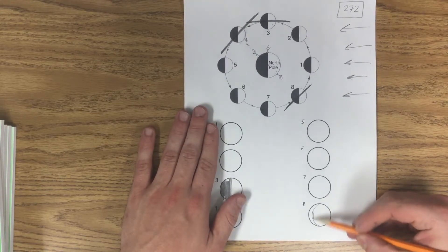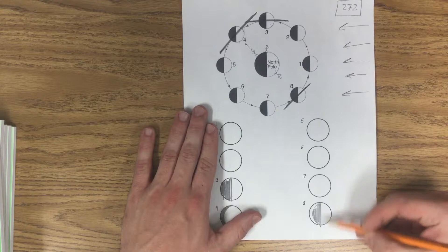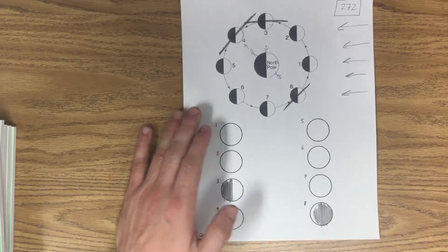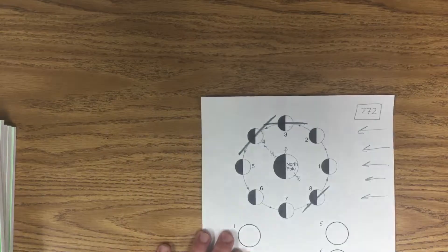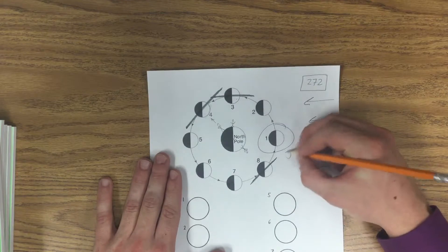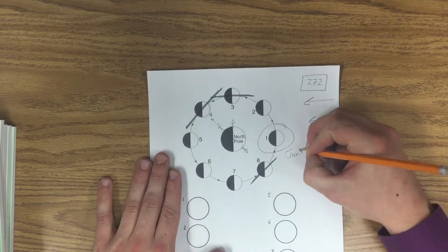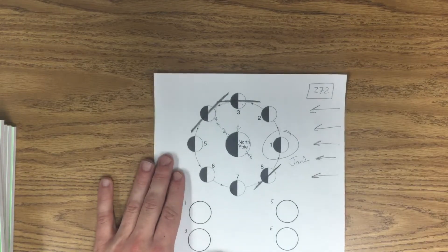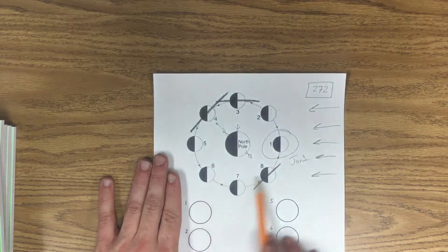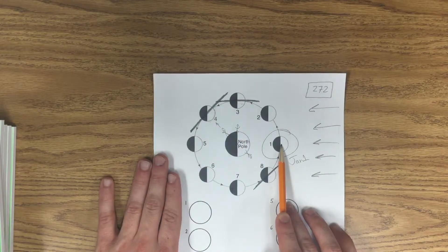All right, so next let's talk about the amount of days it takes to go from one thing to the next. Let's say that this is January 1st. It takes 29.5 days for the moon to go from here all the way back here.